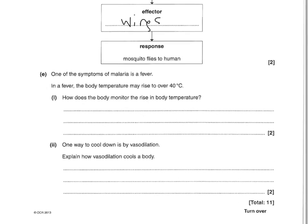One of the symptoms of malaria is fever. In a fever, the body temperature may rise to 40 degrees. How does the body monitor the rise in body temperature? You say the brain for the first mark — or you can say the hypothalamus if you are being smart. And for the second mark, you say it monitors the temperature of the blood. The word blood is important there to get the mark.